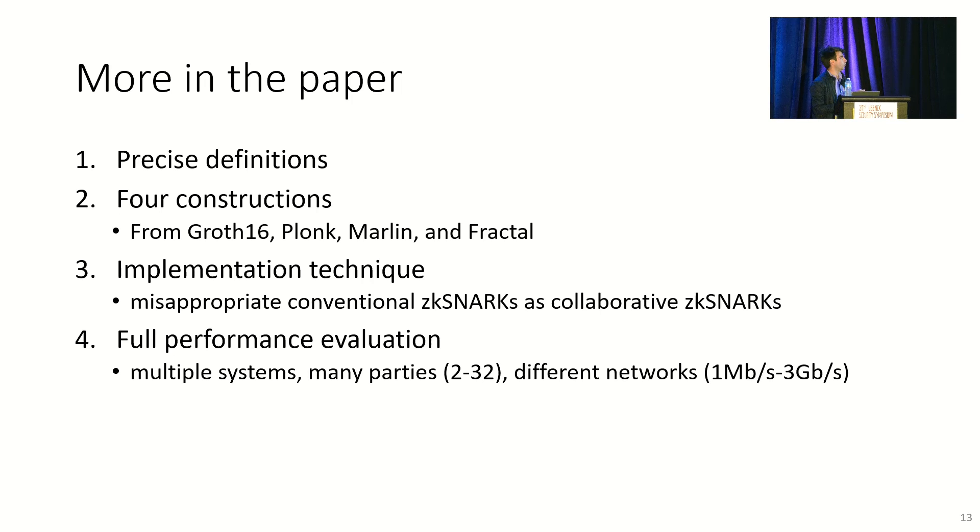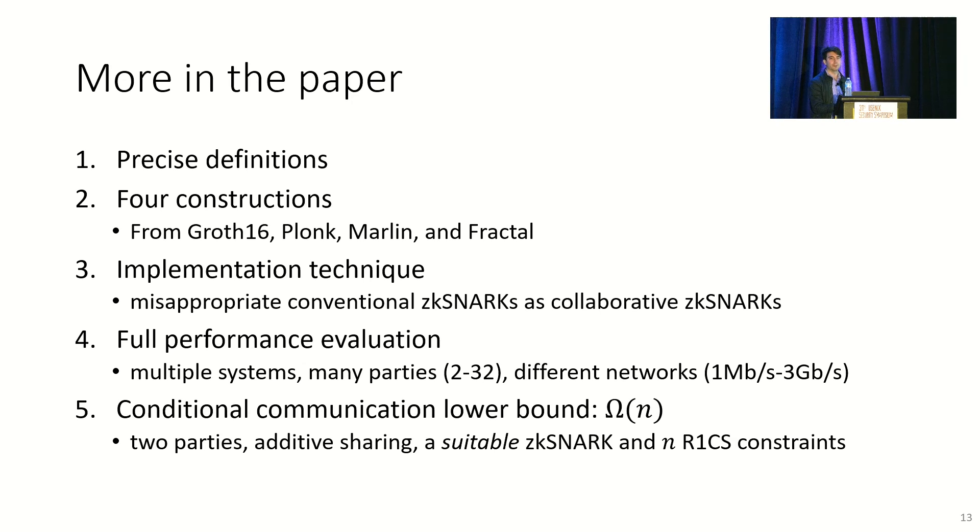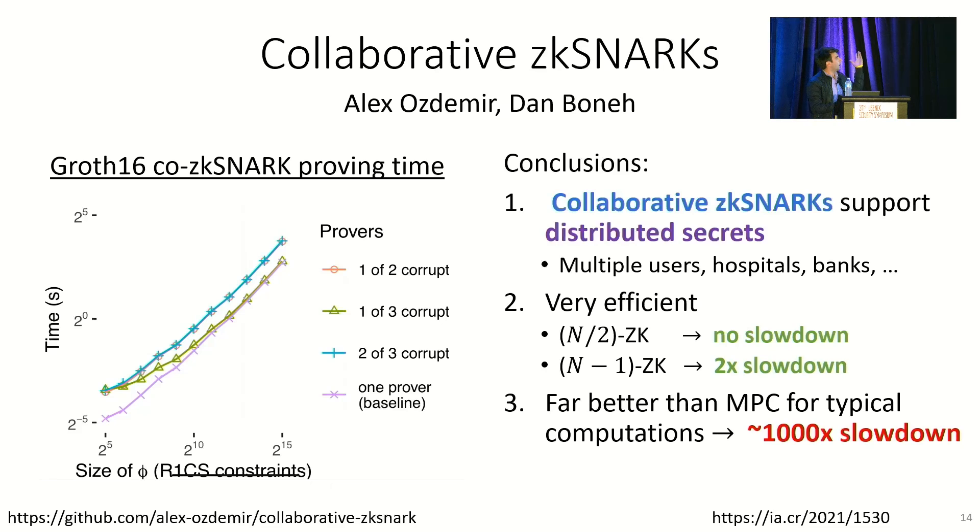We then take all those implementations, we evaluate them, we include large numbers of parties and poorer networks than the one that we were just discussing. We even show a conditional communication complexity lower bound. So we show that if you're working with just two parties, you're using additive secret sharing, and your ZK-SNARK satisfies a natural property, then the amount of communication that you need to do in order to construct a collaborative ZK-SNARK is going to be at least linear in the number of rank one constraints asymptotically. Some of our constructions meet that bound, so that shows that in a very limited and partial sense, they are asymptotically optimal.